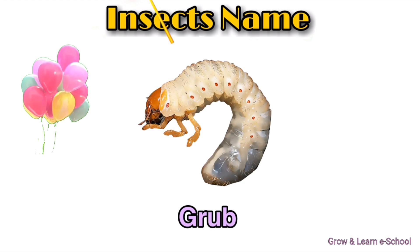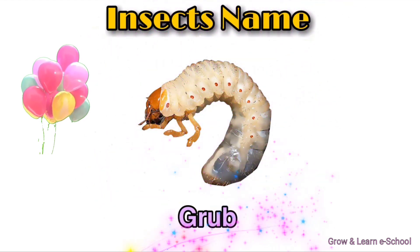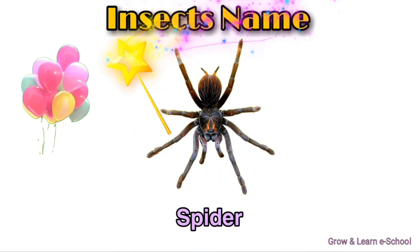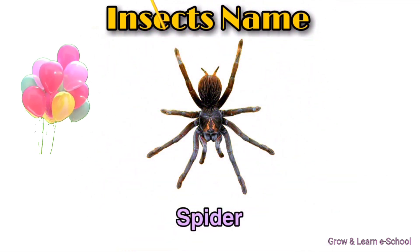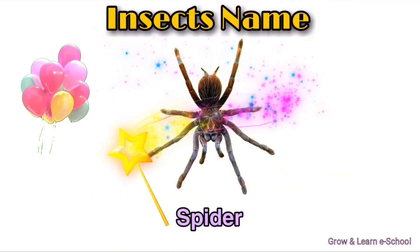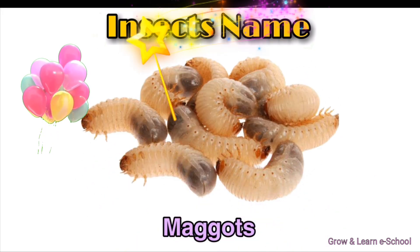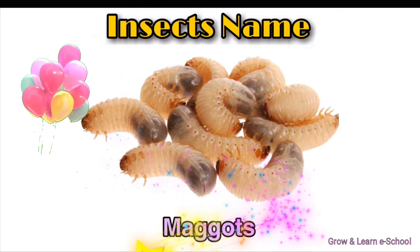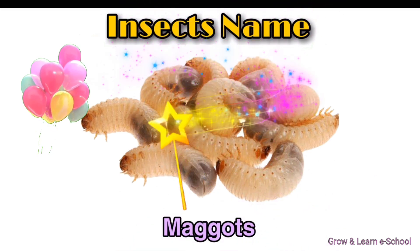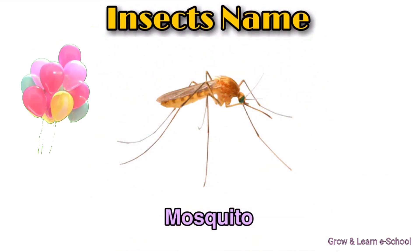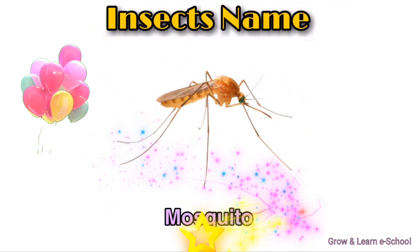Grub. This is a grub. Spider. This is a spider. Maggots. These are maggots. Mosquito. This is a mosquito.